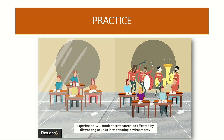Let's practice. Try to identify the independent and dependent variables, and determine which is the control and experimental group. The experiment is: 'Will the student's test scores be affected by the distracting sounds in a testing environment?' The independent variable is the distracting sounds — correct. The dependent variable is the test scores. Now, which is the control group — the one on the left or right? If your answer is the one on the left, you are correct. And obviously, the one that receives the intervention, which is the distracting sounds, is the group on the right, making them the experimental group.